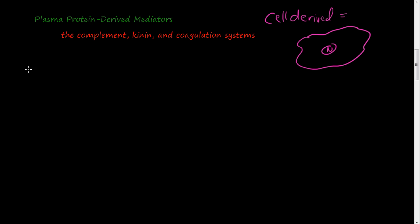Now we are going to talk about all the plasma protein-derived mediators of inflammation. This is a blood vessel and inside the blood vessel there are little proteins. There's a lot of stuff inside your blood but part of that is these little proteins, the plasma protein-derived mediators. Of the plasma protein-derived mediators, we are going to talk about the complement system, the kinin system, and the coagulation system.